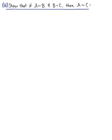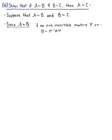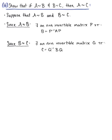To prove Property 3, we need to verify that if matrix A is similar to matrix B, and if matrix B is similar to matrix C, then matrix A is similar to matrix C. Since A is similar to B, by definition there exists an n by n invertible matrix P such that B equals the inverse of P times A times P. And since matrix B is similar to matrix C, there also exists an n by n invertible matrix Q such that C equals the inverse of Q times B times Q.